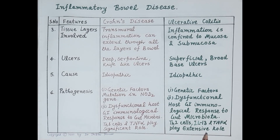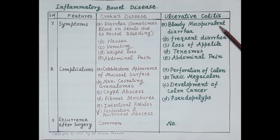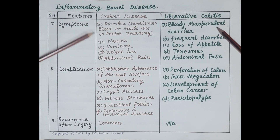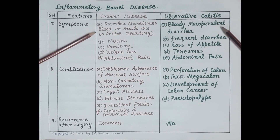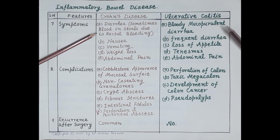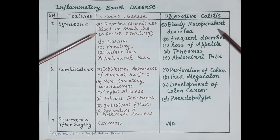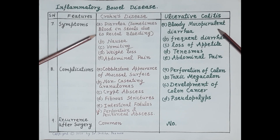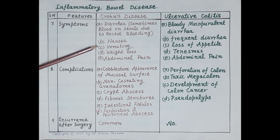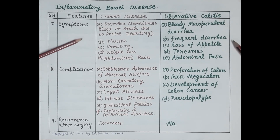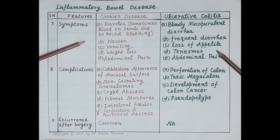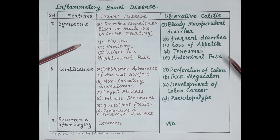Regarding symptoms: Crohn's disease is characterized by diarrhea, and sometimes blood in stools due to rectal bleeding. Other symptoms include nausea, vomiting, weight loss, and abdominal pain. Ulcerative colitis is characterized by bloody mucopurulent diarrhea. Other symptoms include frequent diarrhea, loss of appetite, tenesmus (fecal urgency), and abdominal pain.